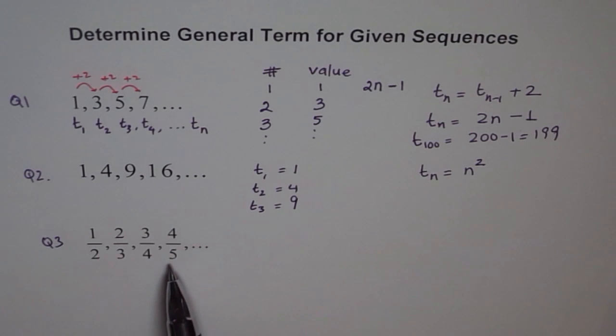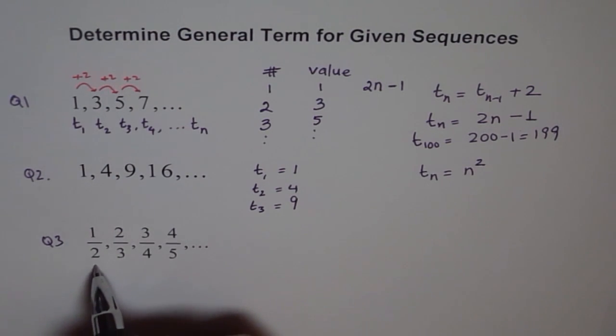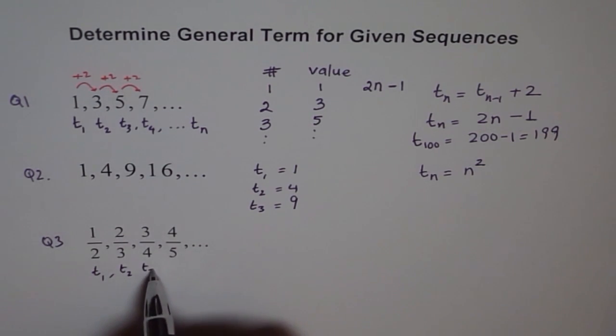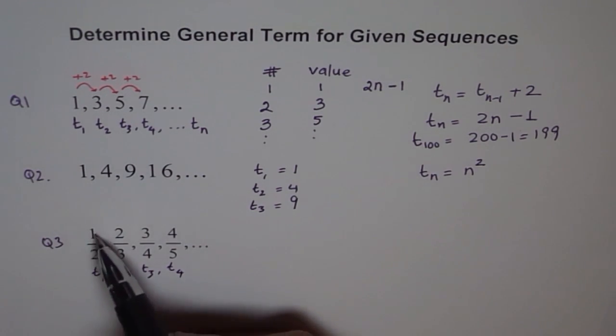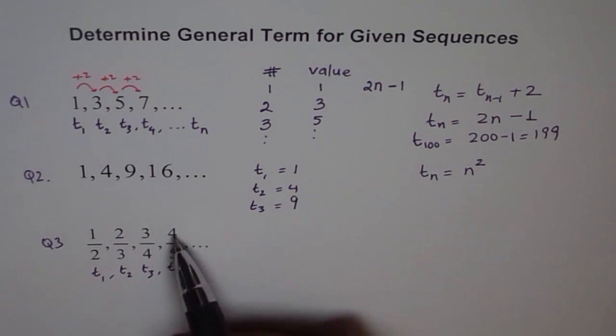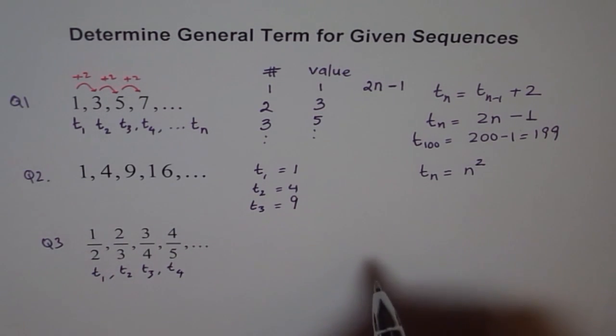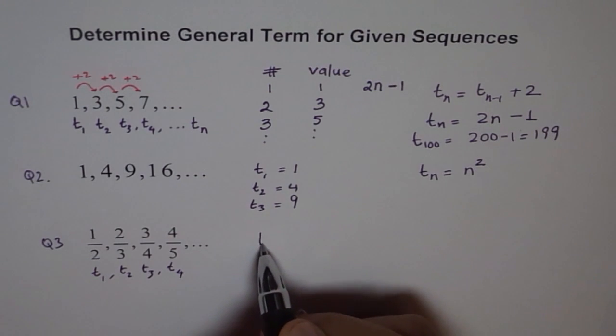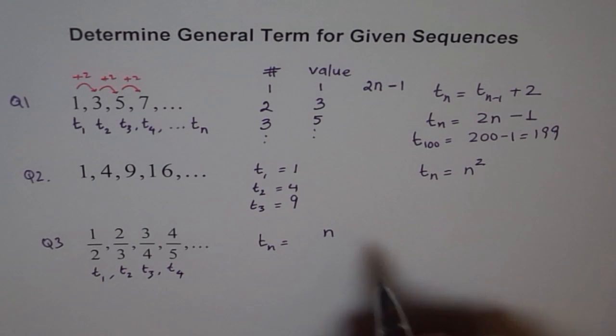This kind of a fraction looks complicated, but what we can do is look at separately for numerator and denominator. In the numerator, we see that the term numbers, this is term 1, this is term 2, this is term 3, this is term 4. So 1, 1, 2, 2, 3, 3, 4, 4. That means for tn, tn in the numerator is just number n, because it is just same.